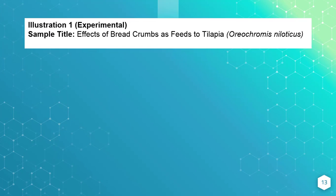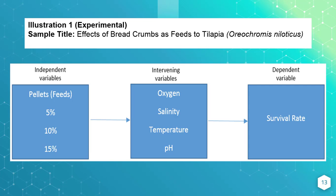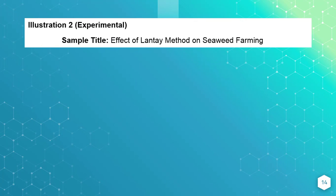Let's look at some example studies to further understand variables. This illustration is an experimental study. The title is 'Effects of Breadcrumbs as Feeds to Tilapia.' The independent variables are the different percentages of feeds to be fed to the fish. The variable affected by this is the survival rate of tilapia. However, some factors can affect the independent variables, especially if the study is conducted in a natural setup such as a fish farm — oxygen, salinity, temperature, as well as the pH of the water may affect the survival rate nonetheless.